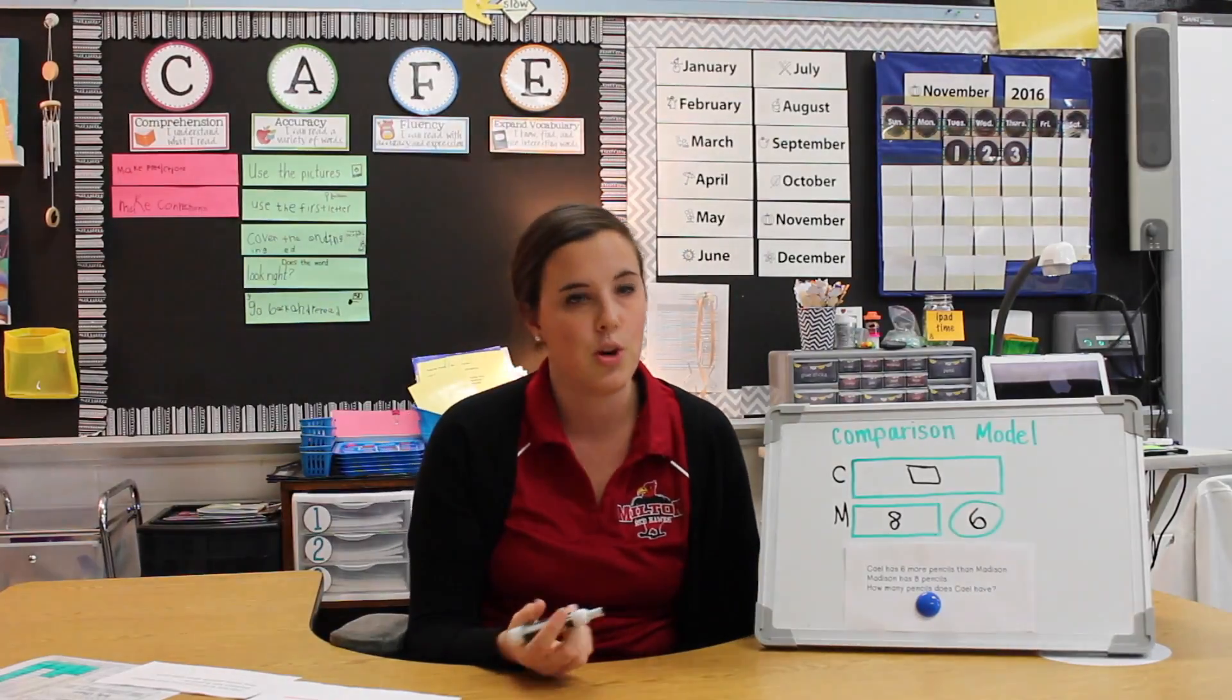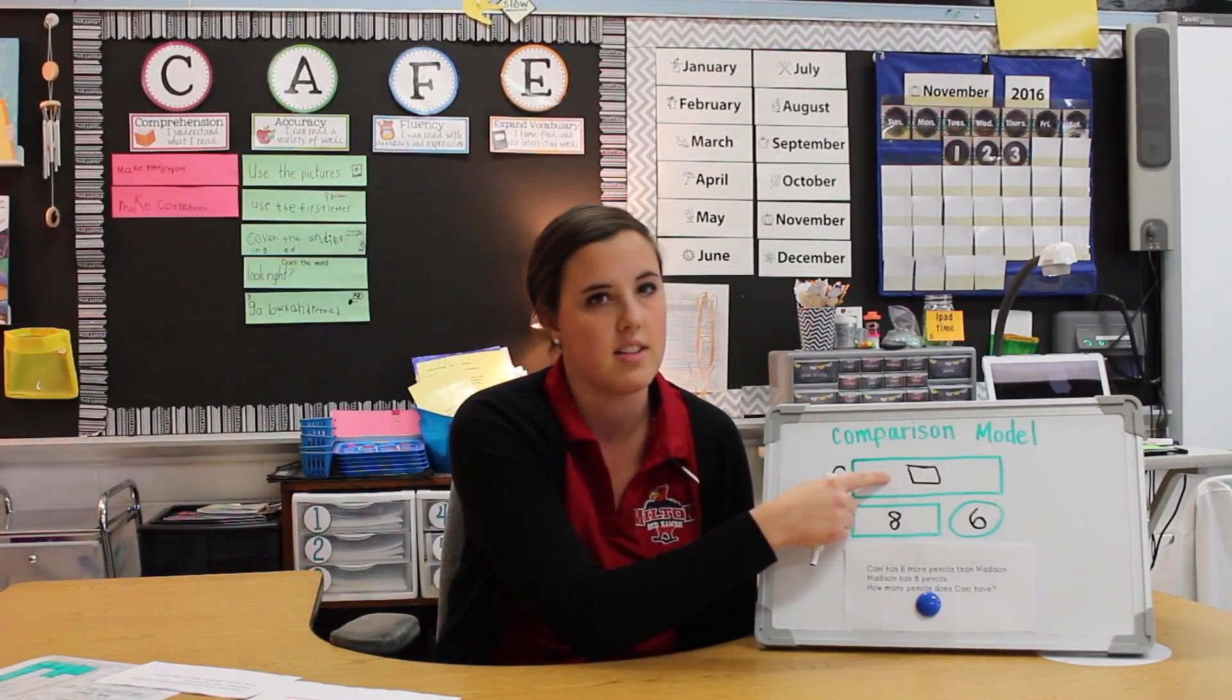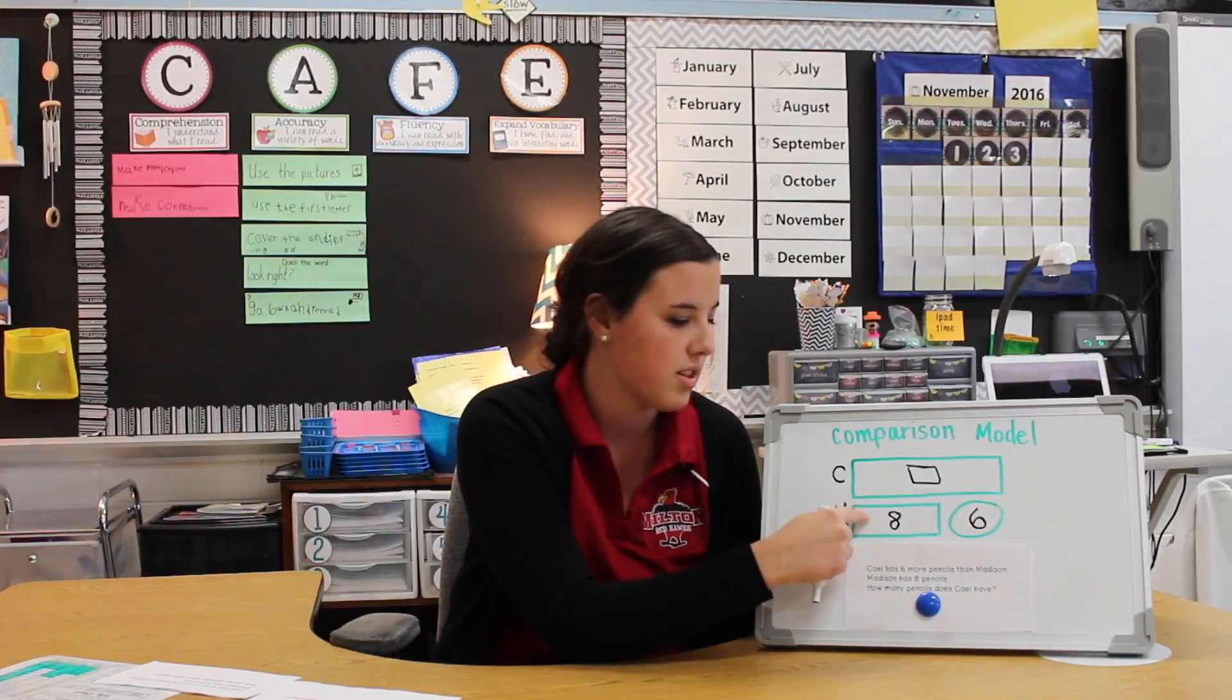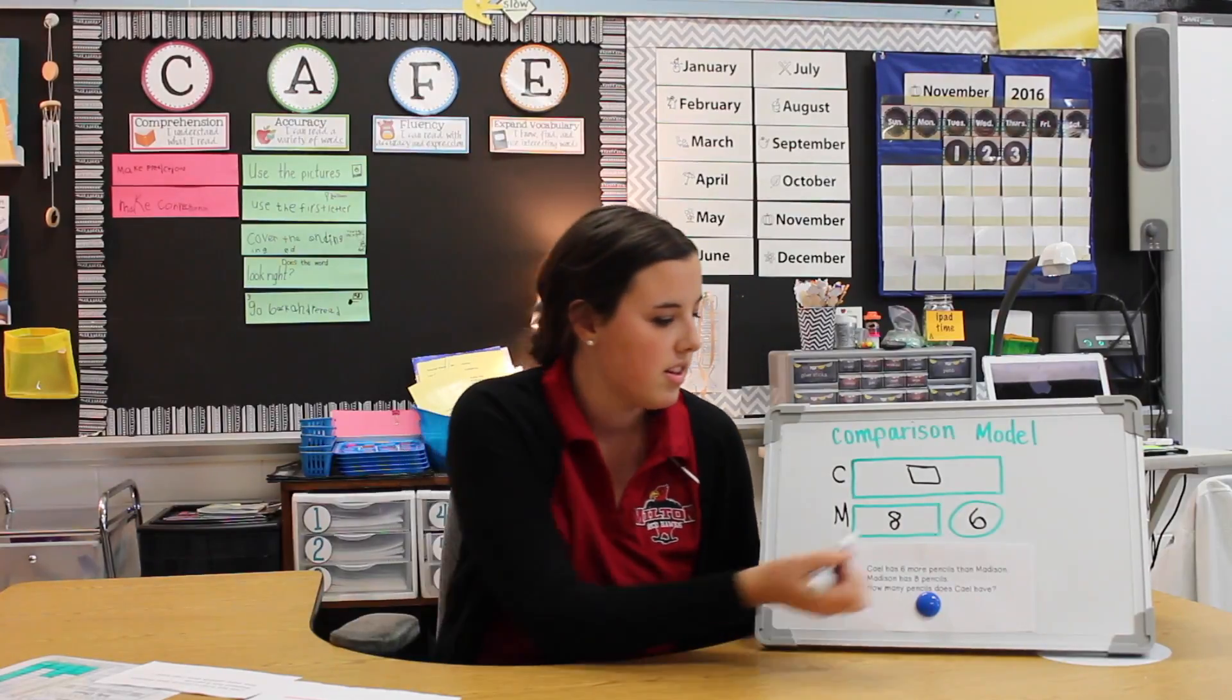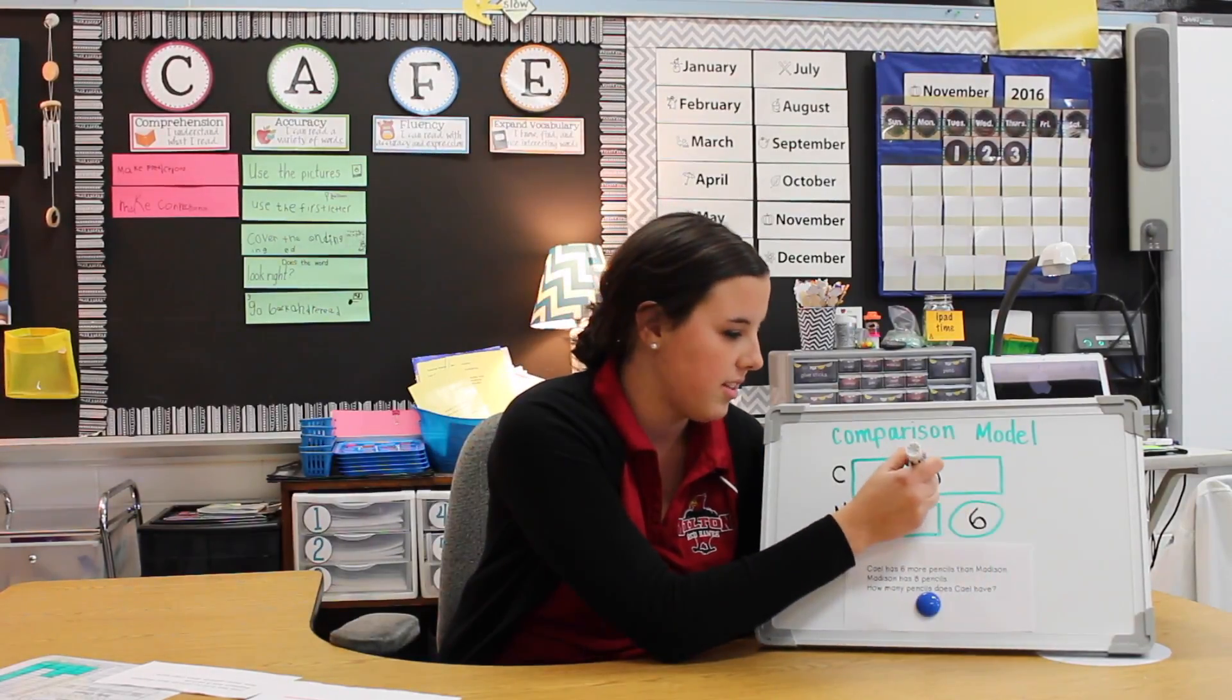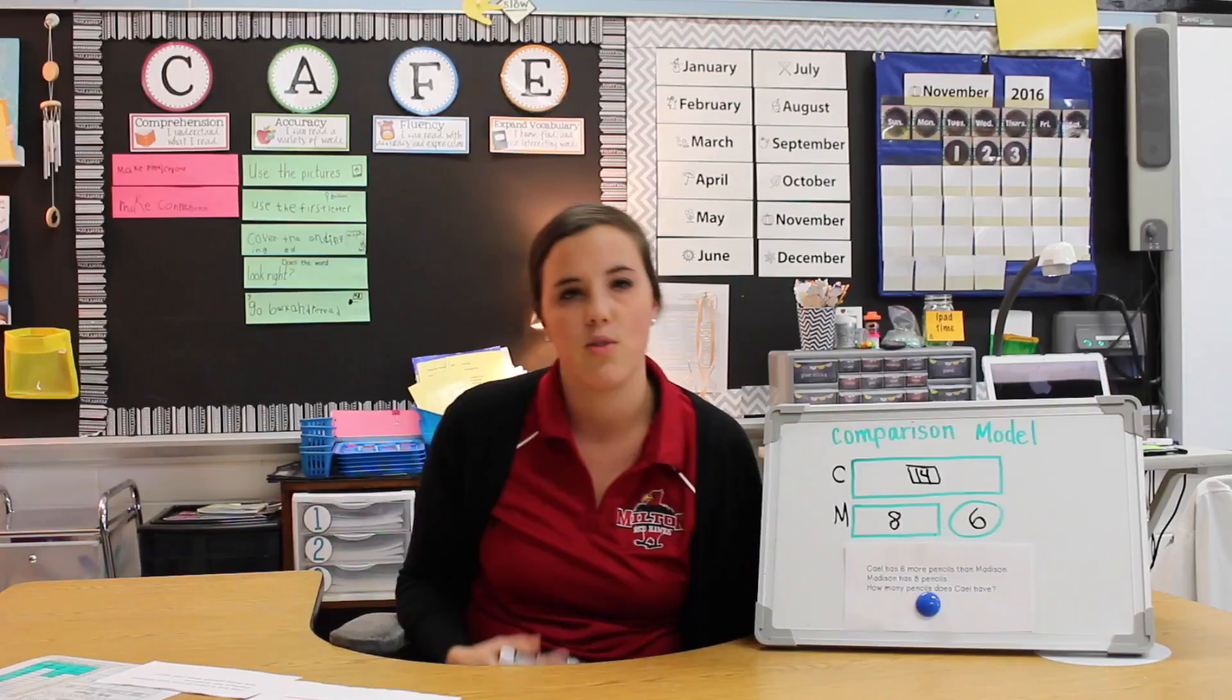Now students need to determine how many pencils Cal has. The best way to do this is to take the smaller quantity plus the difference to figure out how many total pencils Cal has. So eight plus six would be fourteen. Cal has fourteen pencils.